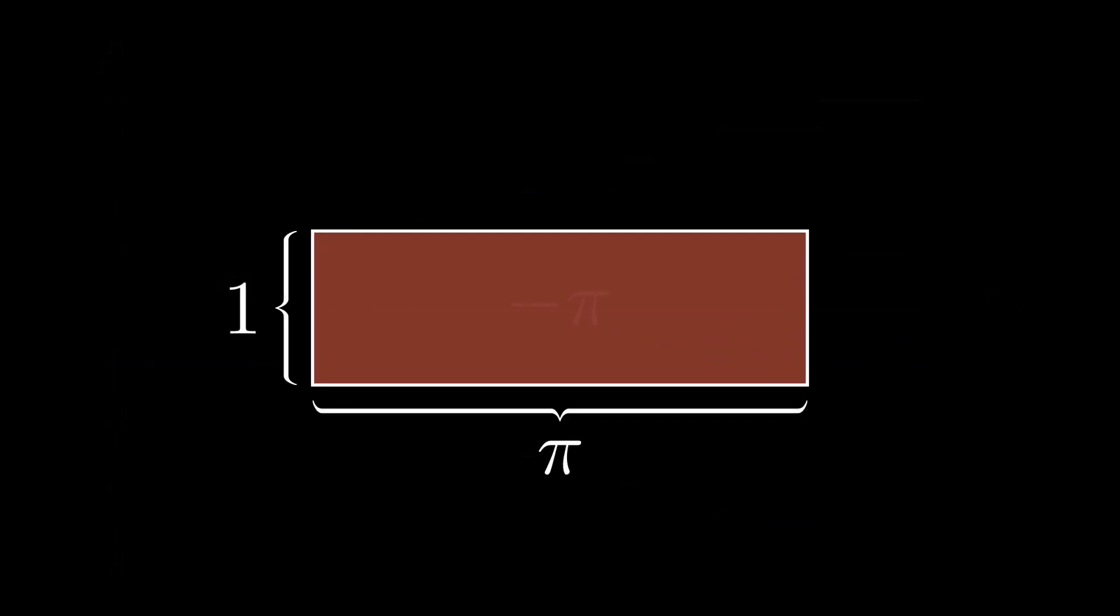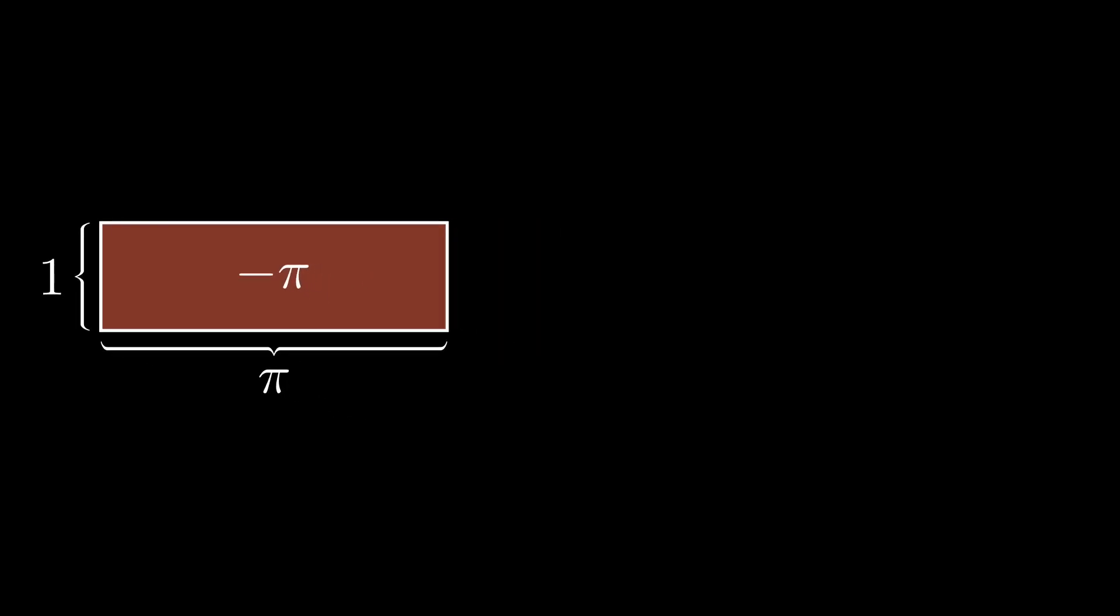So if we add the areas together, which can be visualized by pushing them together and removing any overlaps, we're left with a single red rectangle, with a height of 1, how much further from the x-axis the lower curve was than the upper curve, and a width given by the angle each point moved through, which is pi, one half of a full turn.